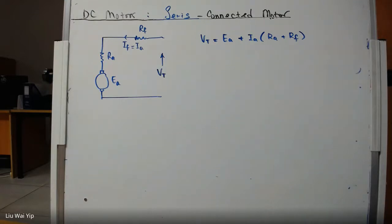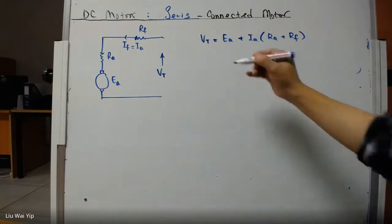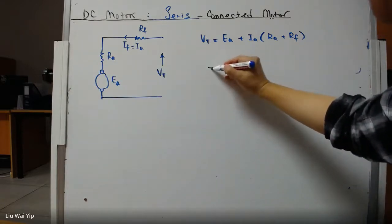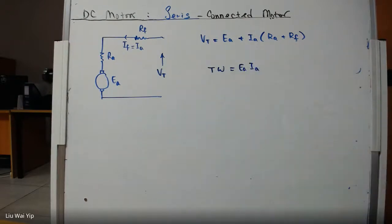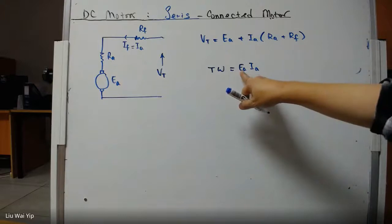Now, another important thing that we need to know is the concept of power. In normal circumstances, the mechanical power, which is equal to T omega, should equal EA times IA. So this is the ideal situation. The mechanical power is going to be the same as the electrical power, which is given by the armature voltage times the armature current.